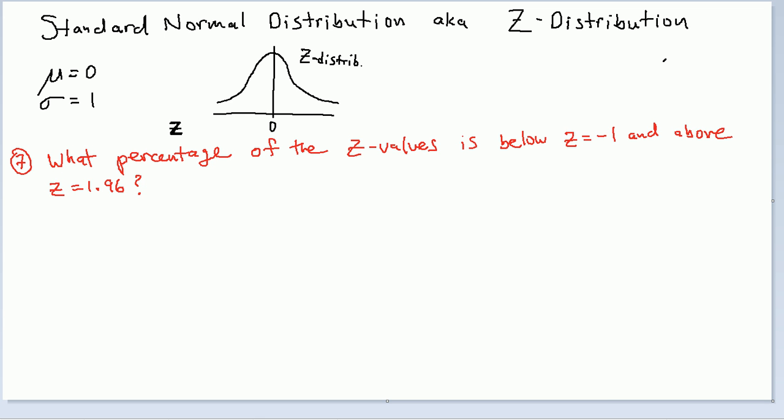Hi guys, in this video we're still in the Z distribution, except this time we're asking perhaps the last question we can. I've flipped it all over the place and this is the last one I can conceive of. If you can think of any others, please be sure to put them down in the comments. But this is strictly for standard normal distributions to get really good practice on dealing with the tables and these concepts of percentages and getting into good habits of drawing pictures, shading areas,